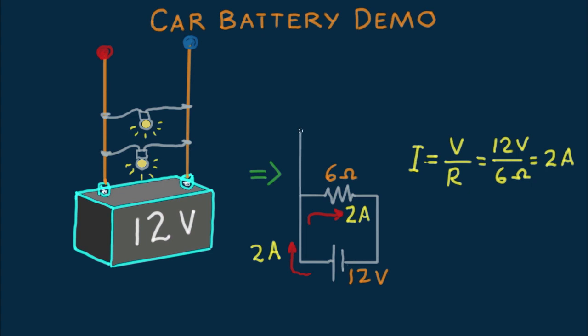What we have now is a parallel circuit with two branches. Our schematic diagram now looks like this. 6 ohms here. How much current is in the top branch? 2 amps. And how much current does the battery now draw? The answer is 4 amps.